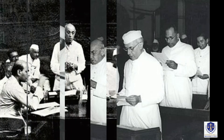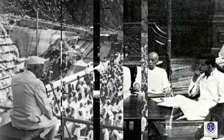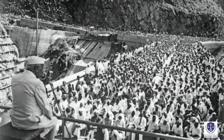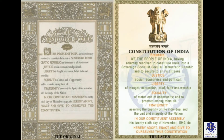The preamble is based on the objectives resolution moved in the Constituent Assembly on 13 December 1946 by Jawaharlal Nehru. The resolution enshrined and laid out the aspirations and values of the people of India through the makers of the constitution. When it was enacted originally, it contained a declaration of the state as sovereign, democratic and republic.